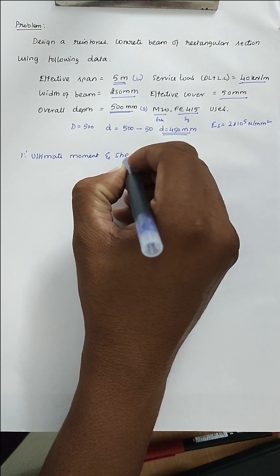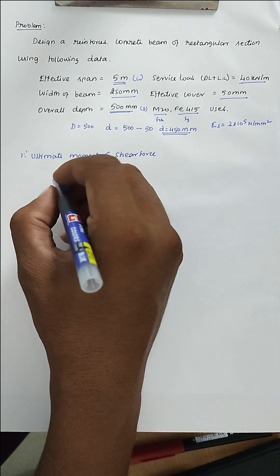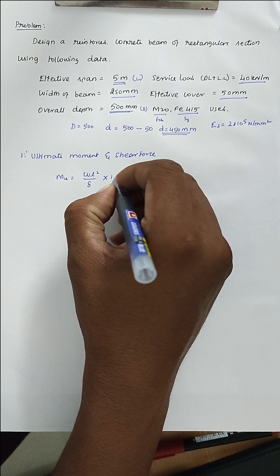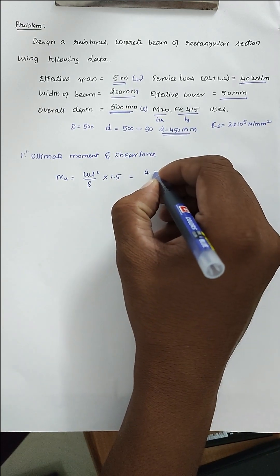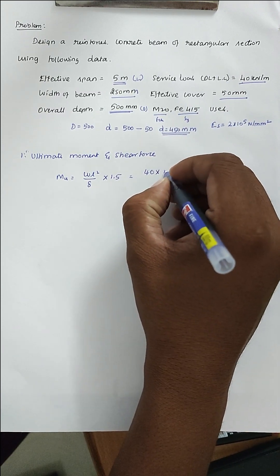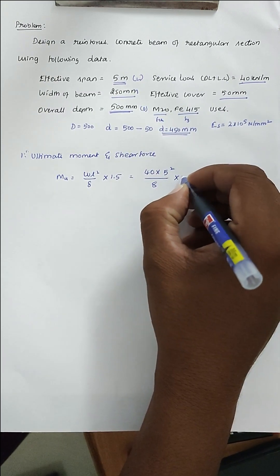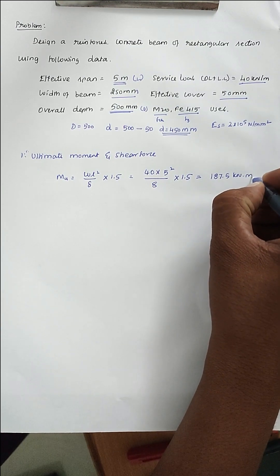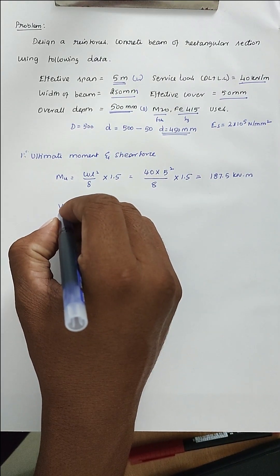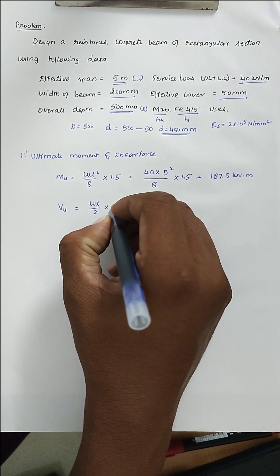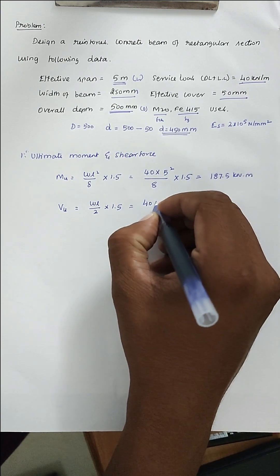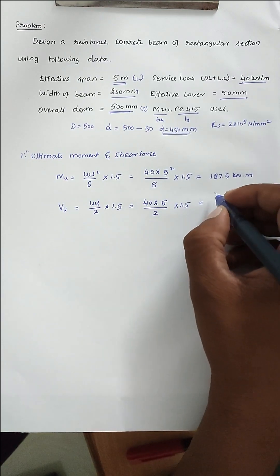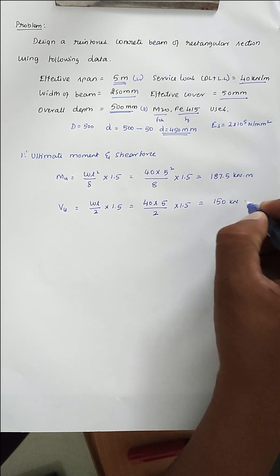Step 1: Find the ultimate moment and shear force. MU = WL²/8 × 1.5 (factor of safety). Substituting: MU = 40 × 5² / 8 × 1.5 = 187.5 kNm. Next, VU = WL/2 × 1.5 = 40 × 5 / 2 × 1.5 = 150 kN.